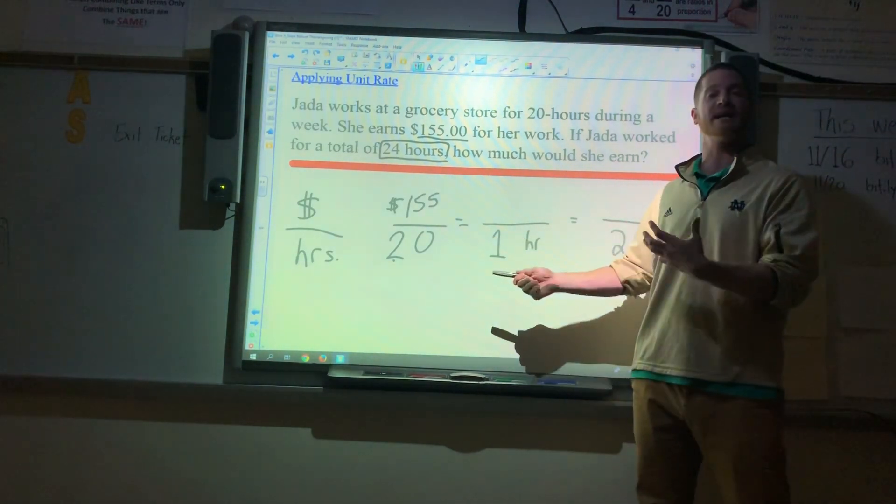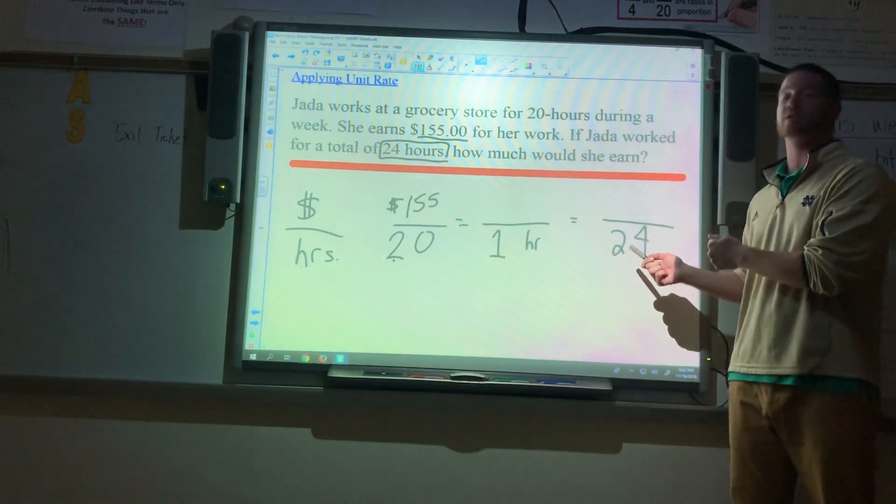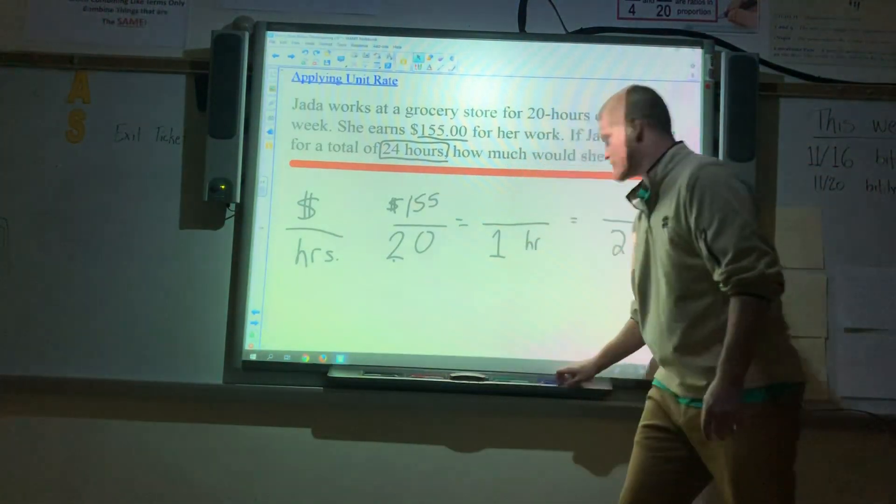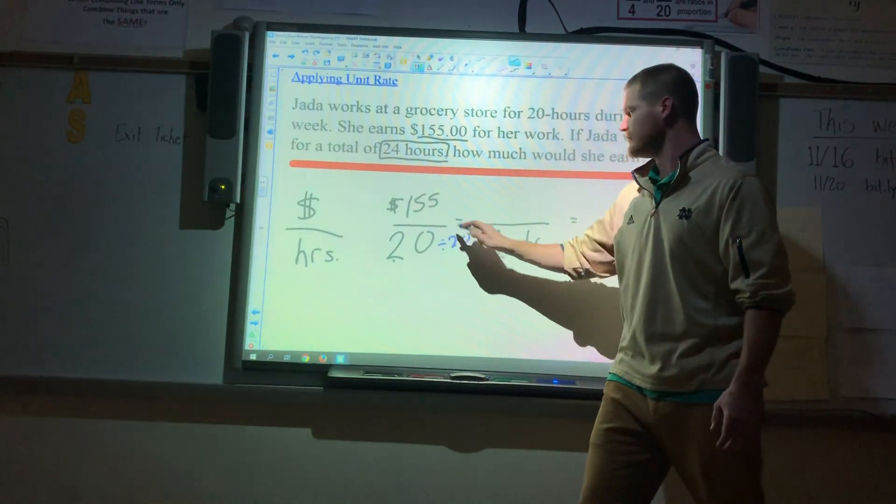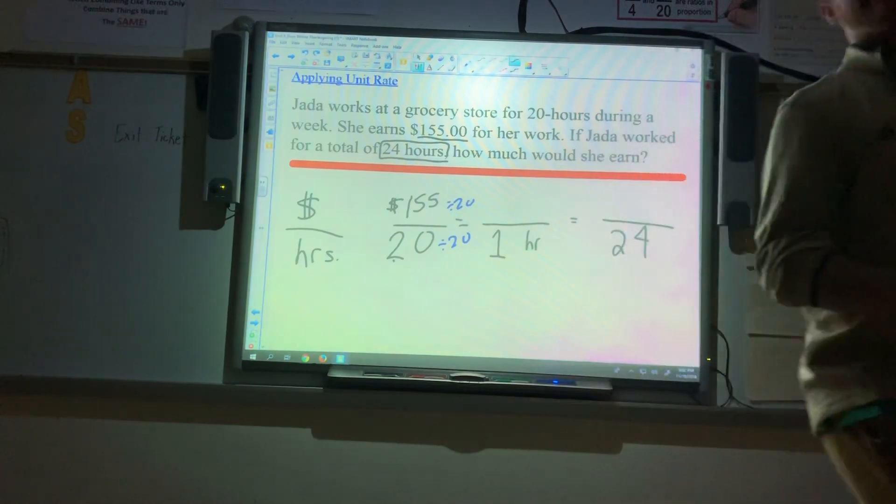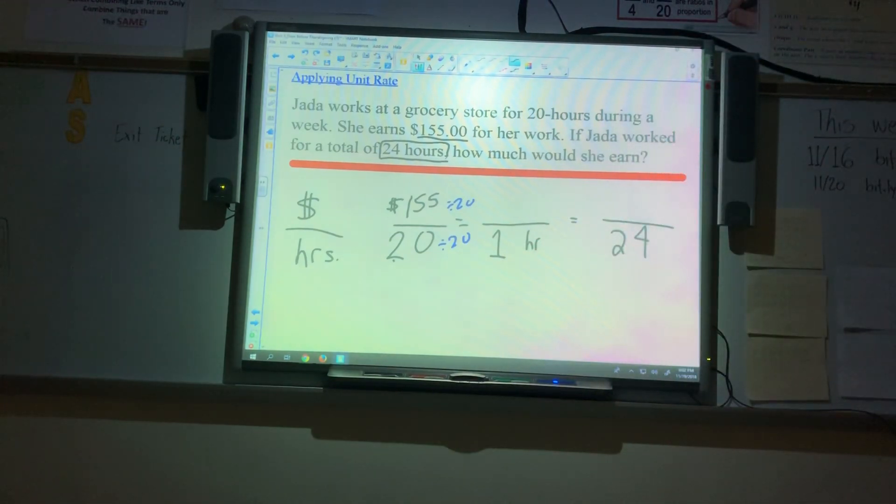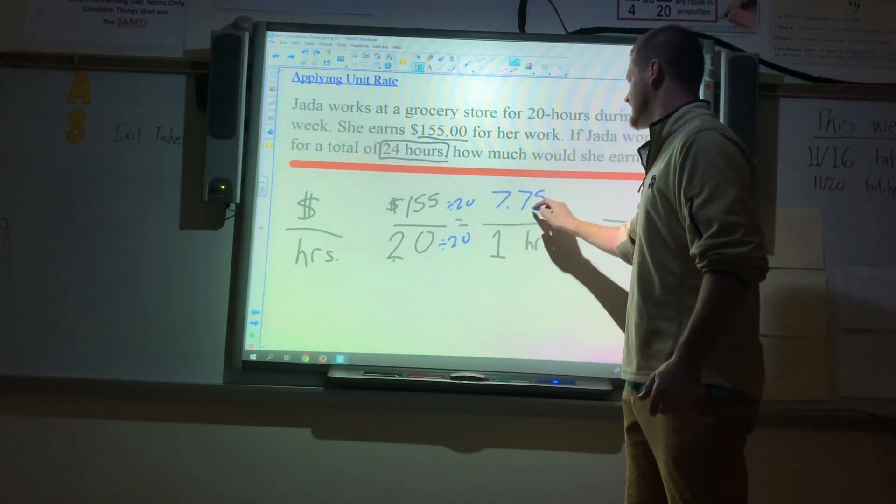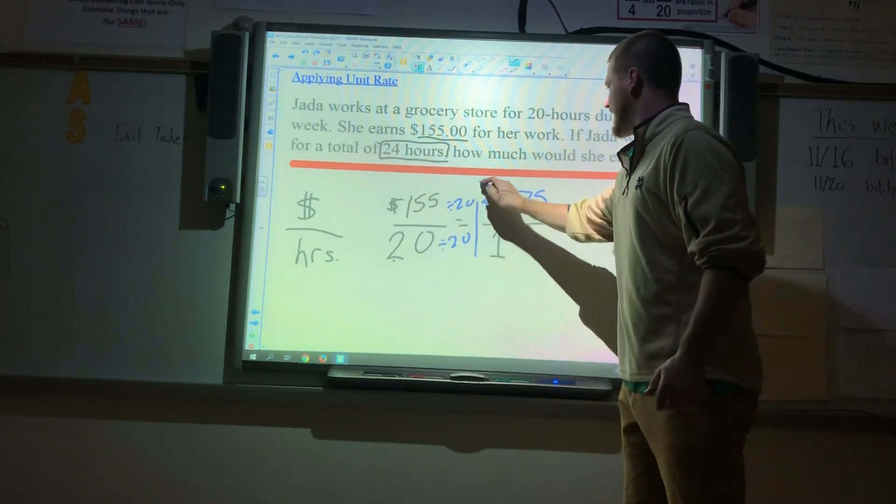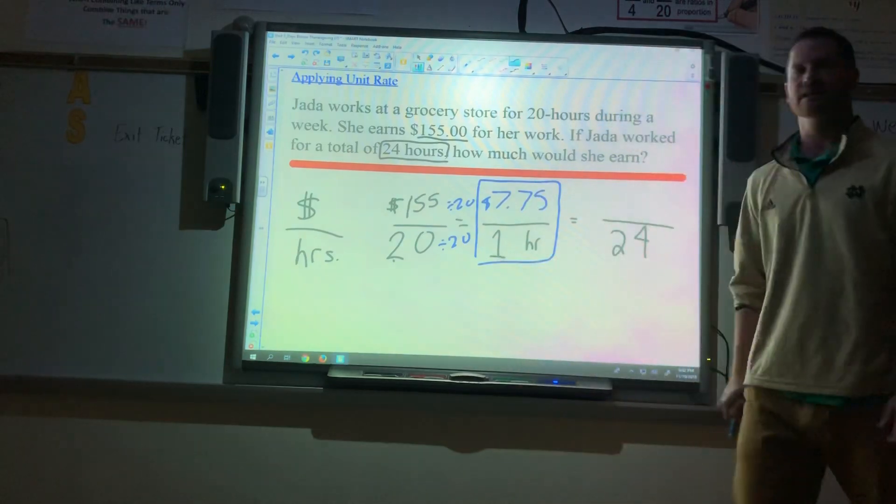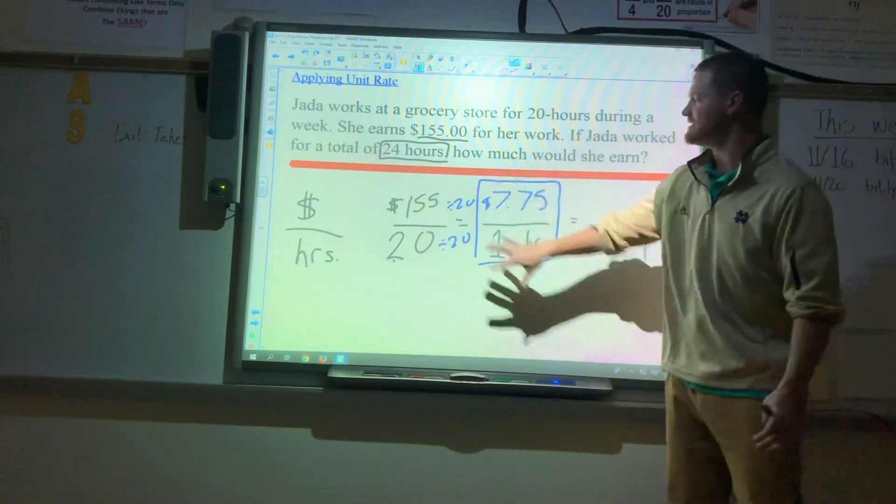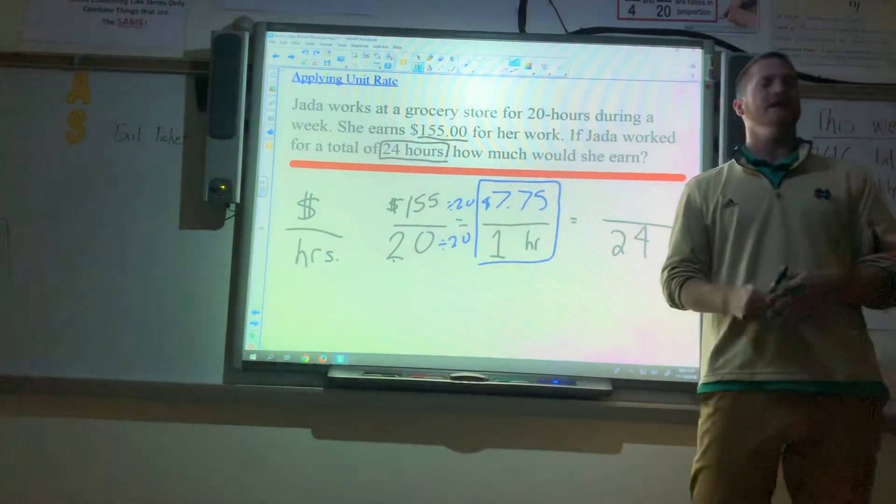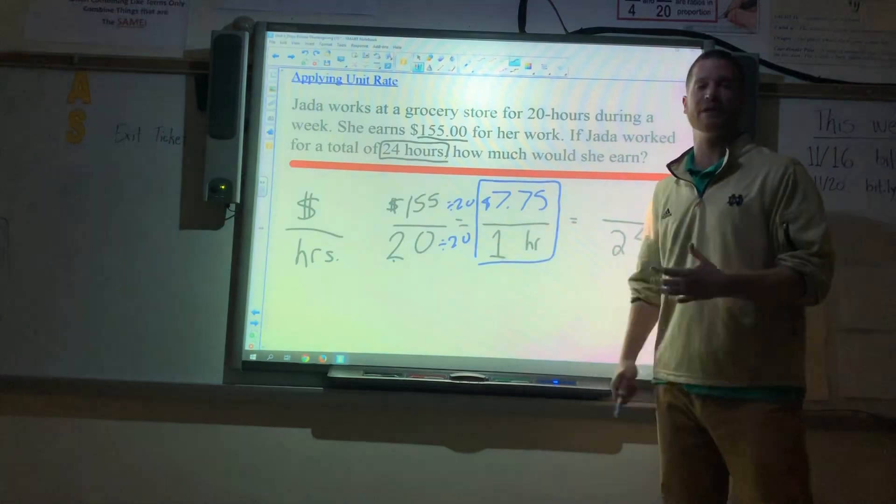I've got to find what she makes per hour before going back up to 24. So, we've got to knock it down to 1 by dividing before going back up to 24 by using multiplication. Going straight across, we're going to let 20 divide by itself as 1. So, we've got to divide that by 20, divide that by 20. Well, if you type this in your calculator, $155 or 155 divided by 20 gives us 7.75. Which means that every hour she works, she makes $7.75. This is our unit rate. That's her hourly wage. So, once we find this very important number, the unit rate, we can answer any question asked.